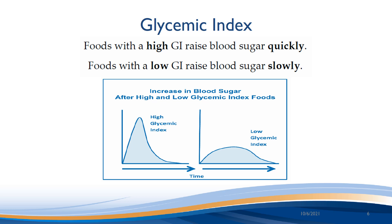The glycemic index, or GI, is a scale that ranks a carbohydrate-containing food or drink by how much it raises blood sugar levels after it is eaten or drank. Foods with a high GI increase blood sugar higher and faster than foods with a low GI.